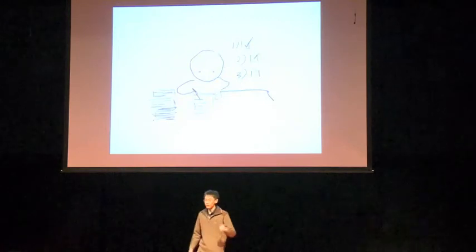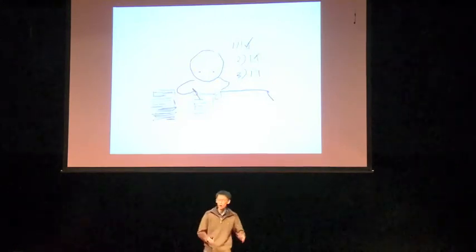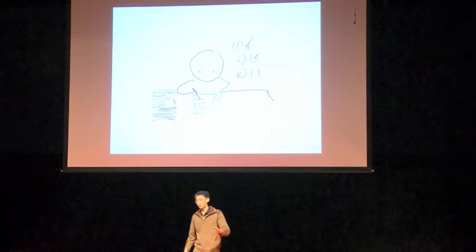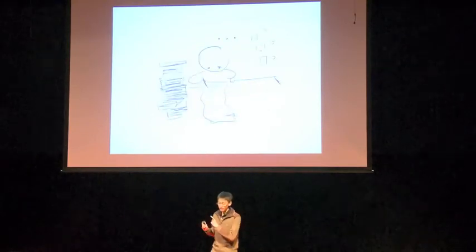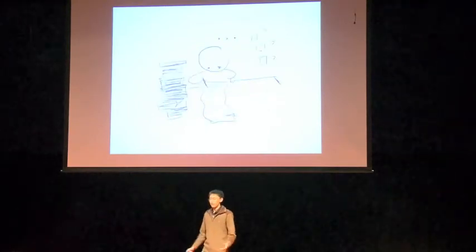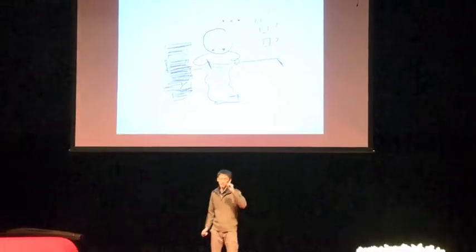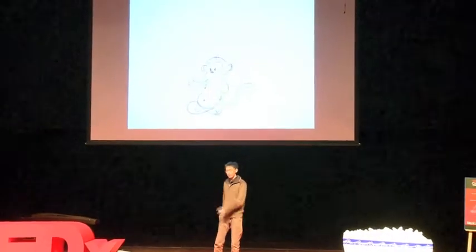So this guy right here, he is a non-procrastinator. He sits down, makes a list, gets things done like a normal rational decision maker. This guy is a procrastinator. He sits down, makes a list, but the difference is that he has a pet. This pet is this monkey here.